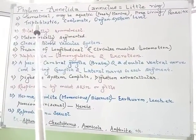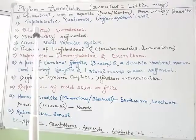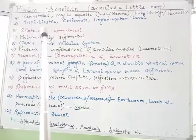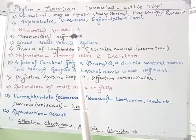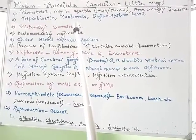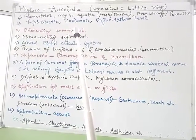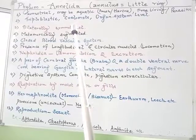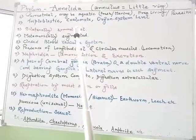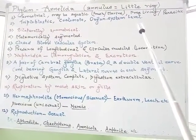Regarding their germ layers, as we have discussed from the group Platyhelminthes, all groups from Platyhelminthes onwards have been developed from three germ layers. So this group is also triploblastic. This is the first group in the animal kingdom from which we may observe a true coelom. They are true coelomate animals, having a true body cavity between the body wall and the alimentary canal. The previous group, Aschelminthes, were pseudocoelomates with a false body cavity. Annelids show organ system level of body organization.